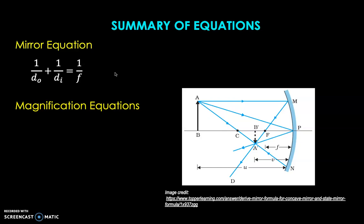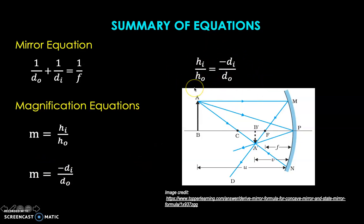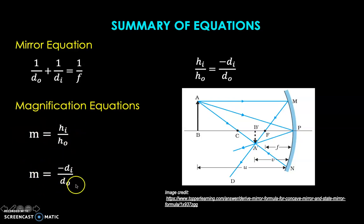Next, we have the magnification equations, which can help us determine whether the image is enlarged or minimized. First, we have M equals H sub I over H sub O, where H sub I is the height of the image and H sub O is the height of the object. Then we have M equals negative D sub I over D sub O, which is an alternative equation for magnification. Because magnification equals both expressions, we can equate them into a single equation, which is useful for problems where one variable is required and the others are given.